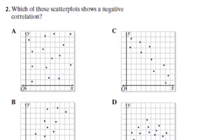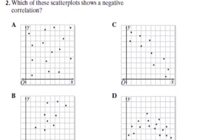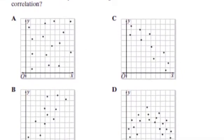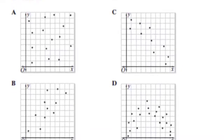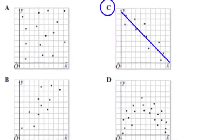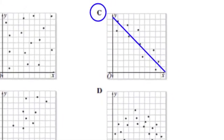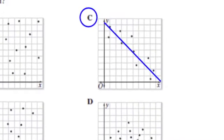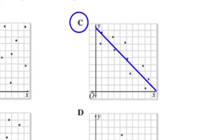All right, in example two, the only scatter plot that shows a negative trend or negative correlation, which is when as one value increases, the other decreases, would be graph C. As the x value increases, the y value decreases.